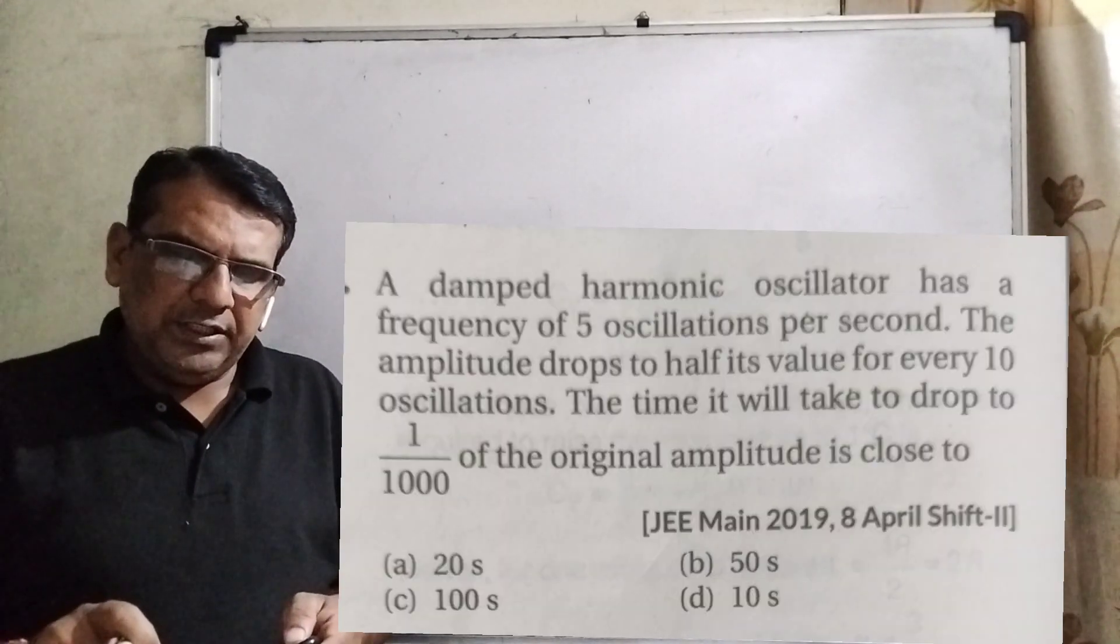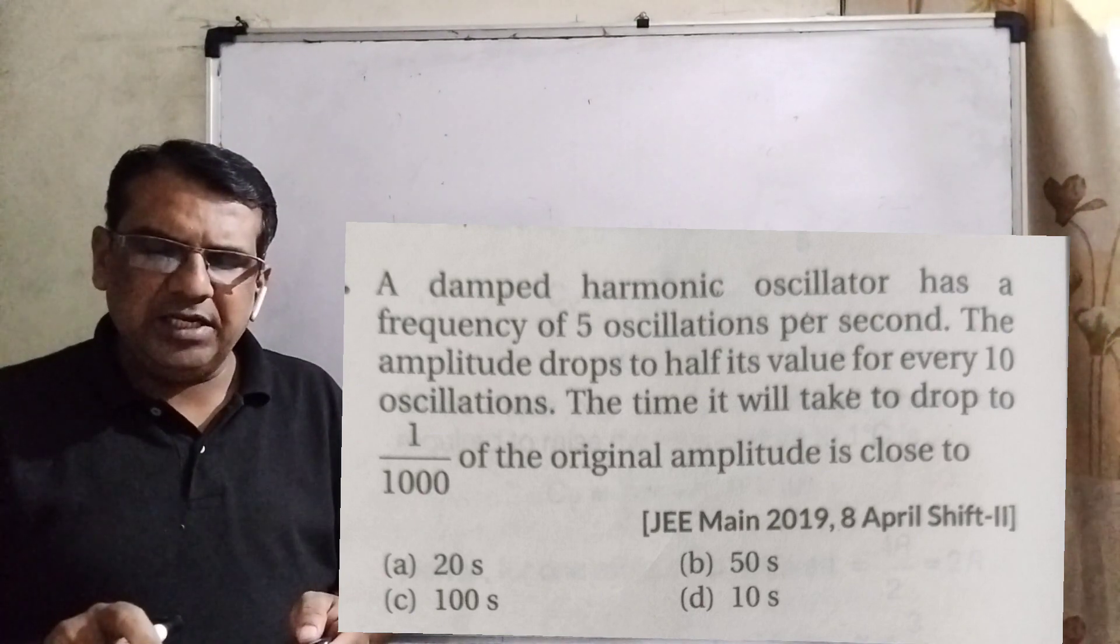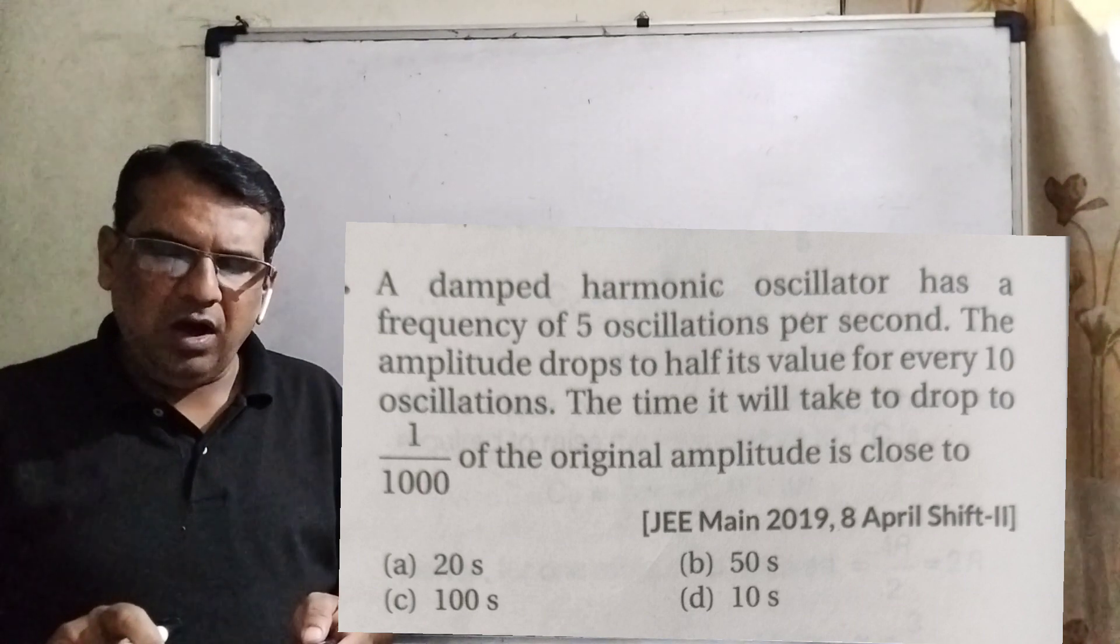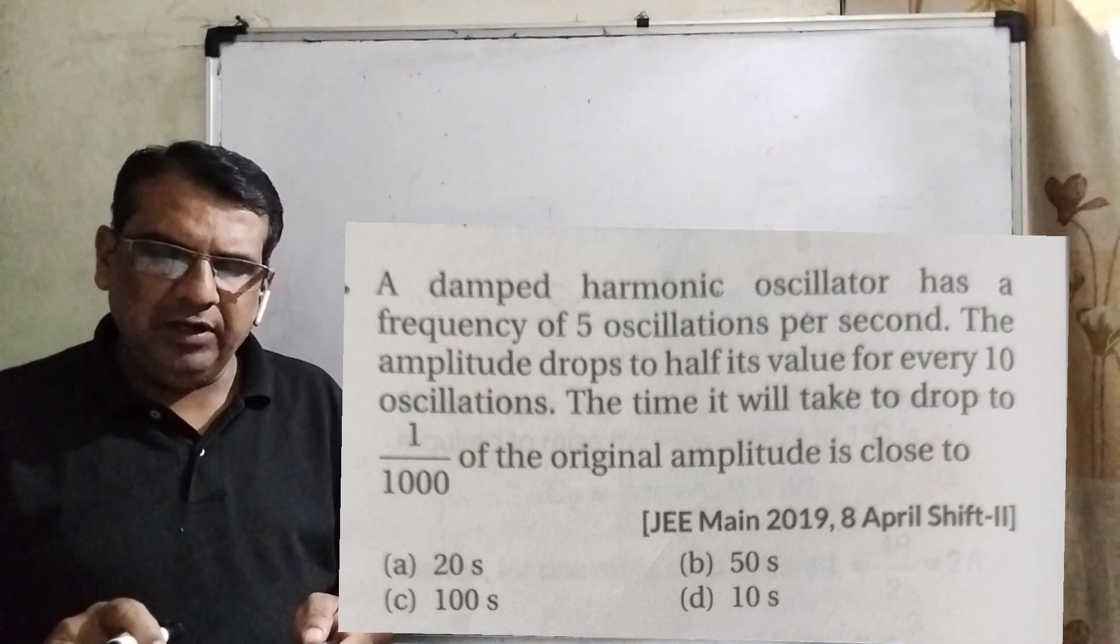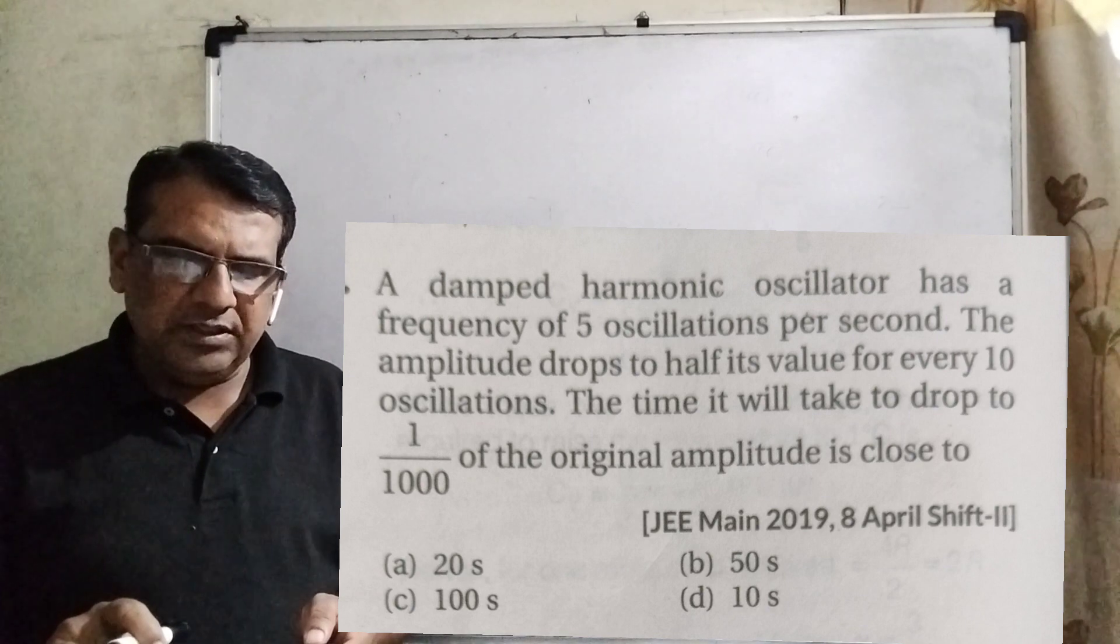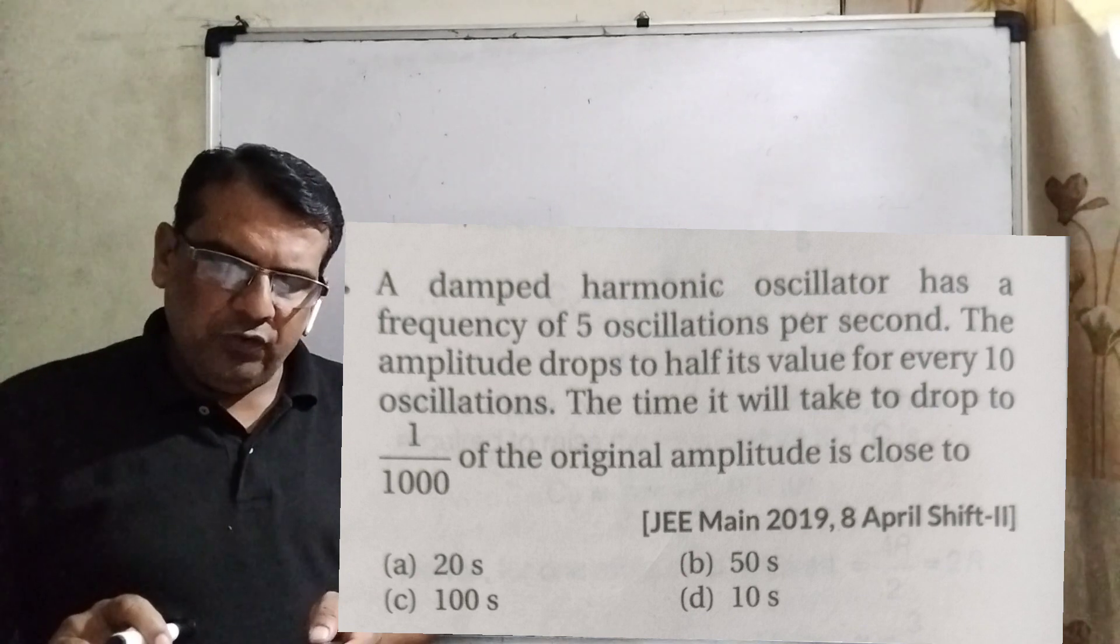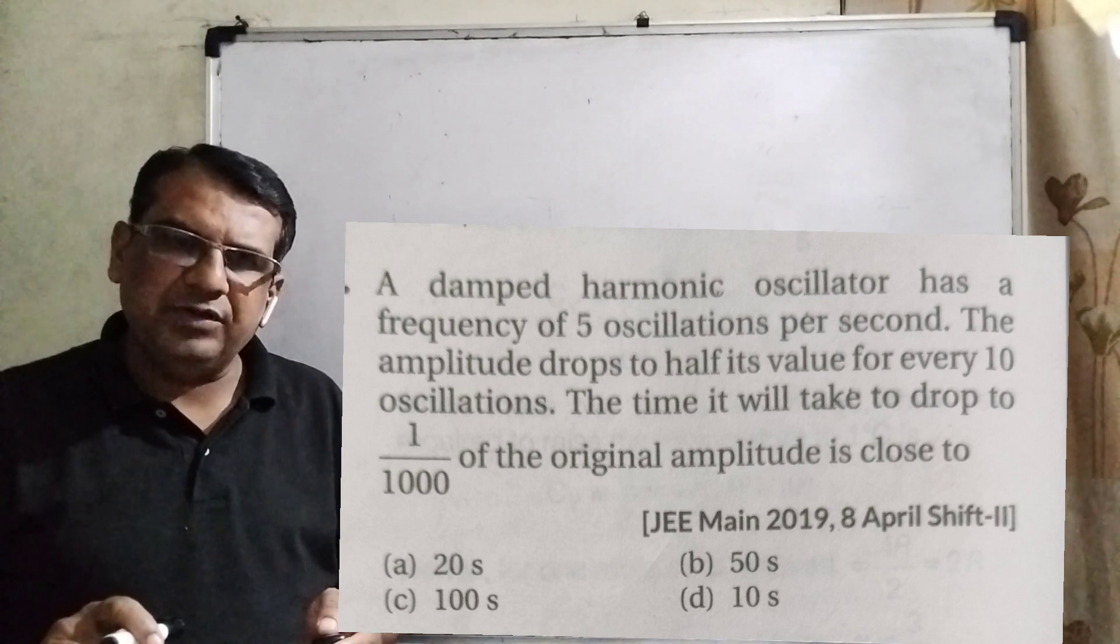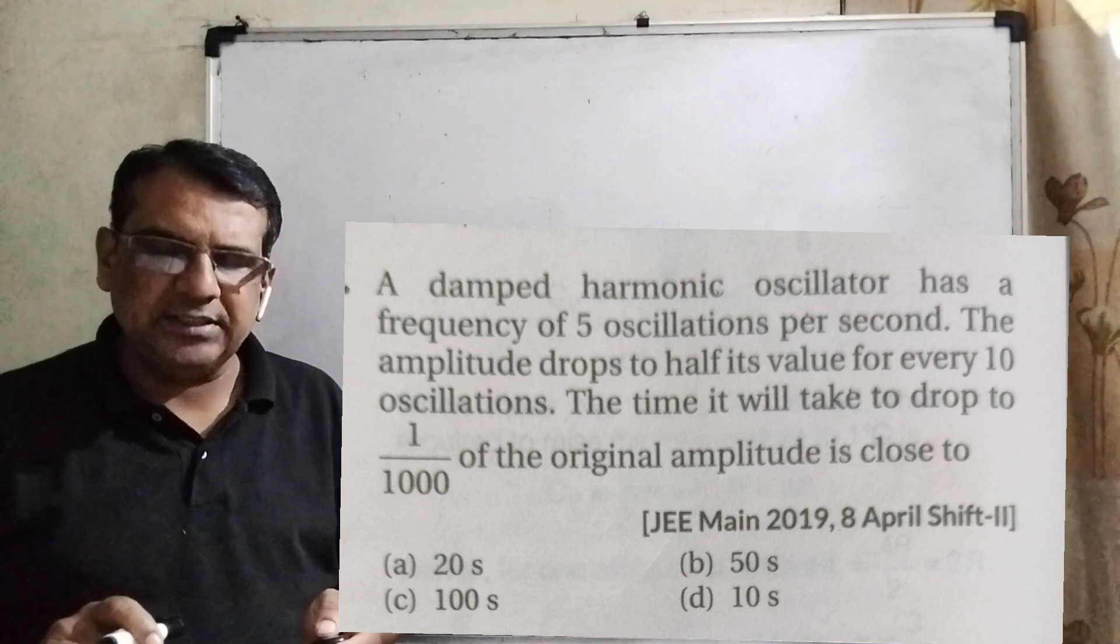What the question says: A damped harmonic oscillator has a frequency of 5 oscillations per second. The amplitude drops to half its value for every 10 oscillations. The time it will take to drop to 1/1000 of the original amplitude is close to... We have given four options: first, 20 seconds; B option, 50 seconds; C option, 100 seconds; and last D option is 10 seconds.